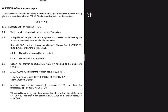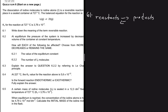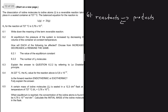Question 6.1 says: write down the meaning of the term reversible reaction. A reversible reaction is a reaction in which not only do the reactants form the products, but the products also form the reactants.